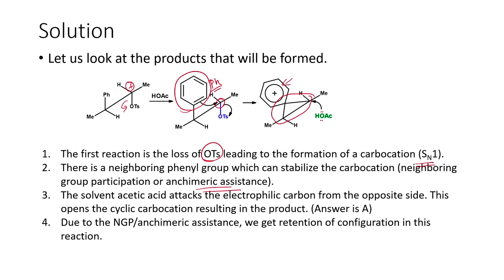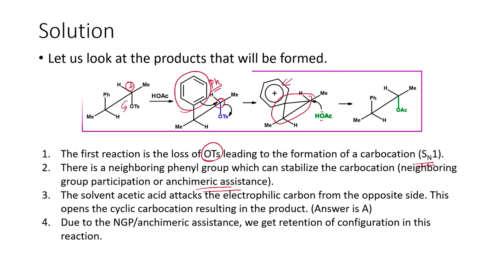Once this cyclic intermediate is formed, similar to the bromonium ion case, the nucleophile (acetate) attacks from the bottom side because the top side is blocked by the bulky phenyl group. This is again anti-addition or trans-addition. The acetate group is introduced at the same position from which OTs was lost.